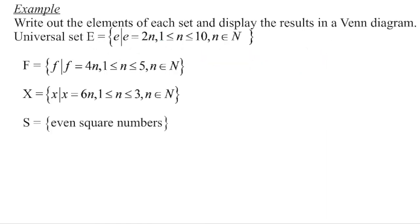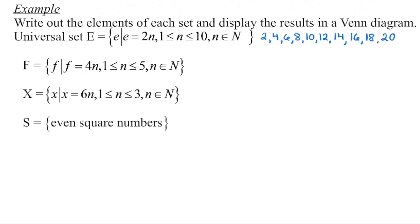We'll conclude with a final example where we write out the elements of each set and display them in a Venn diagram. Our universal set is E, such that E equals 2N, where N is an element of the natural numbers, greater than or equal to 1 and less than or equal to 10. Starting with N=1: 2×1=2; N=2: 2×2=4; N=3: 2×3=6; continuing until N=10: 2×10=20. So the universal set E contains 10 elements: {2, 4, 6, 8, 10, 12, 14, 16, 18, 20}.